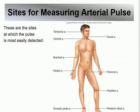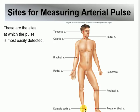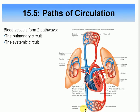Pulse points — we covered this last week, so this is just review. Temporal is here, facial here, carotid here, brachial, and then the radial right here, the femoral, the popliteal, the posterior tibial, and the dorsalis pedis. Most likely you'll have a picture and need to label which pulse point is being shown.